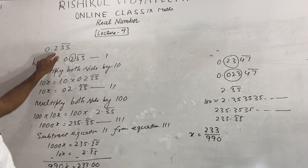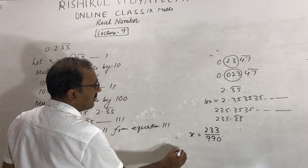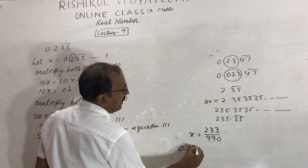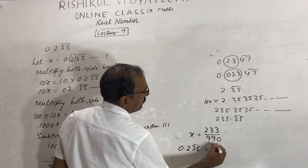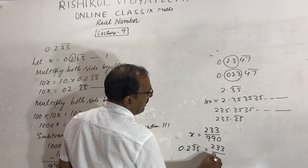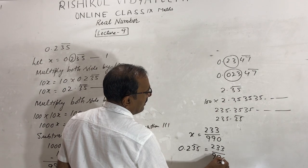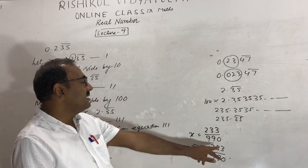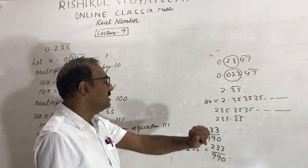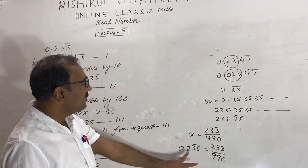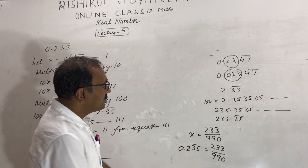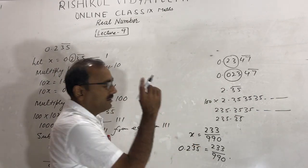So we can write 0.235 bar equals 233 upon 990. In other words, if you divide 233 by 990 you will get 0.235 bar.